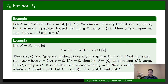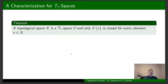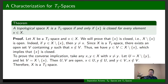This is a very nice characterization for T1 spaces: a topological space X is T1 if and only if every single-point set in the topological space is closed. How can we prove this property? The proof is quite straightforward. I'm going to prove the converse implication and leave the forward implication for you as an exercise.